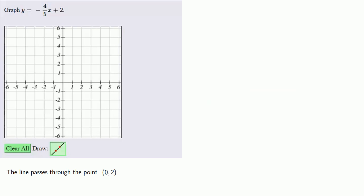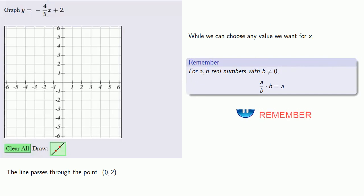Now we need to find a second point. While we could choose any value we want for x, we might consider that because we're going to be multiplying x by this fraction, if we multiply a fraction by its denominator, that will eliminate the fraction. And so while we could choose any value we want for x, if we let x equal 5, we'll eliminate the fraction.